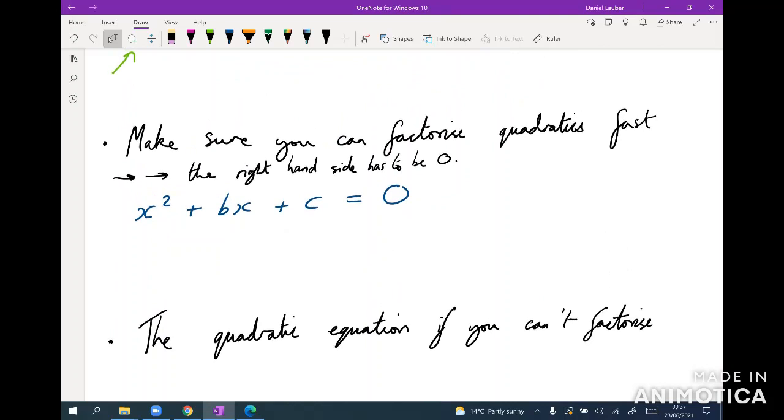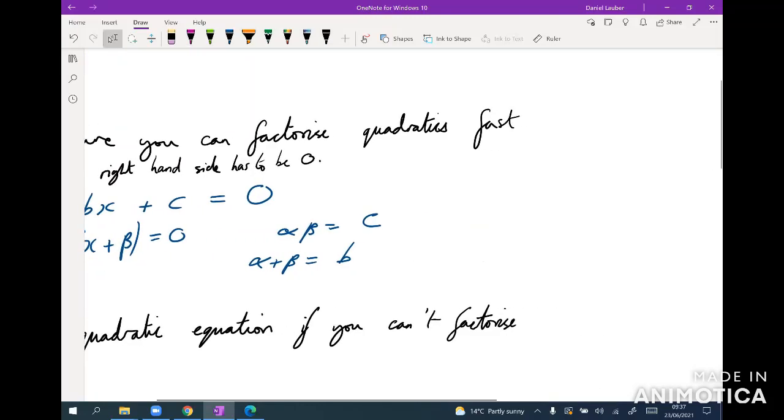The next thing is just make sure you can factorize quadratics very quickly. Make sure the right-hand side is zero, and then what you're doing is you're trying to factorize it into this form: x plus alpha times x plus beta, where alpha times beta equals c and alpha plus beta equals b. Notice how I've made the coefficient of x equal to one, just because it tends to be much easier to factorize if you do that. Make sure you're very practiced with this and it's sort of second nature to you because you just need to be very fast, otherwise you'll run out of time.